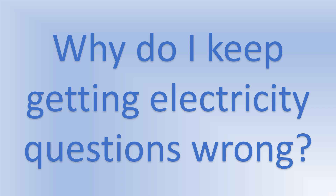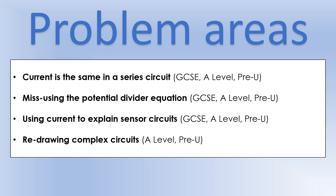So first off, where are these mistakes occurring? The first three will apply to all levels of physics - GCSE, any level, pre-U, whatever it is you're doing - these are mistakes you see all the time. The last one is more appropriate for the higher levels; it's not a skill that's particularly required at GCSE. So that's kind of the pitch of these.